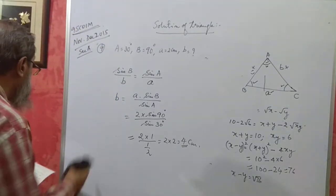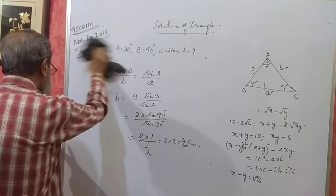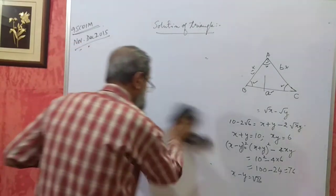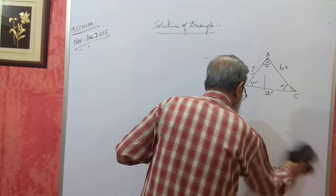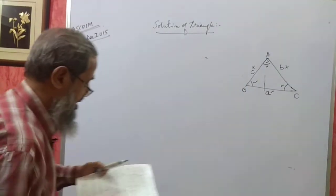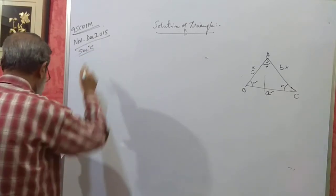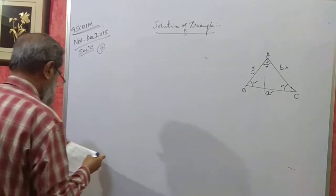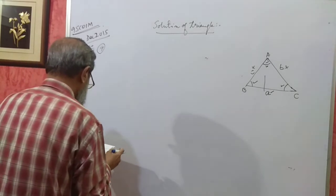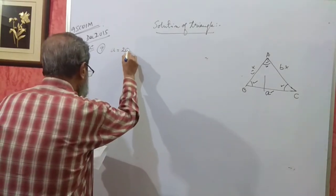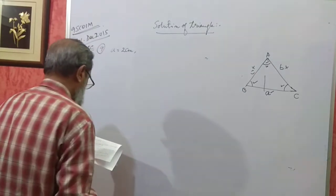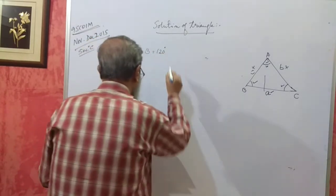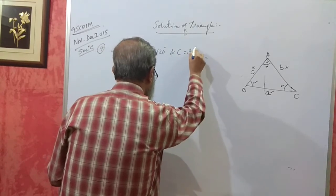Next, in the same paper — 2015, November/December, Section C — they have given the ninth question: solve triangle ABC if A is 2 centimeters, B is 120 degrees, and C is 30 degrees, for 5 marks.